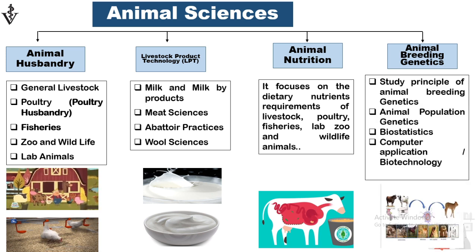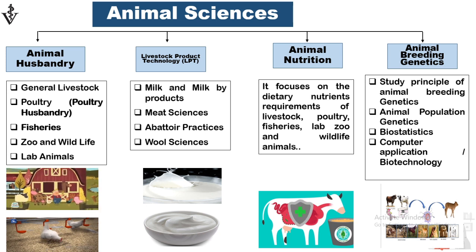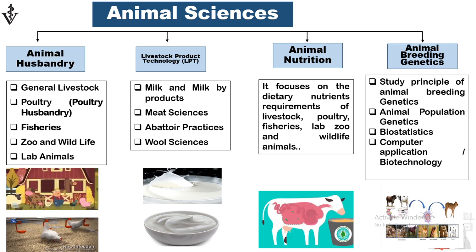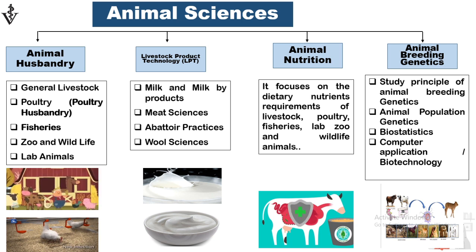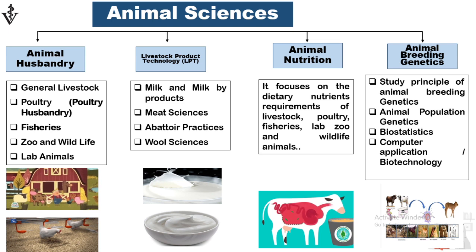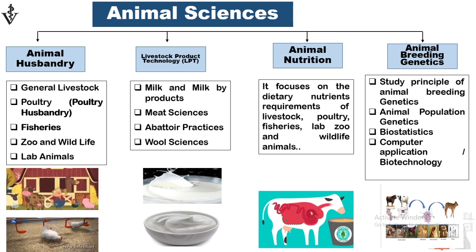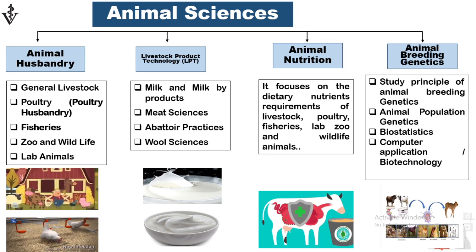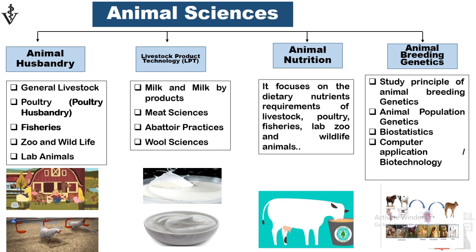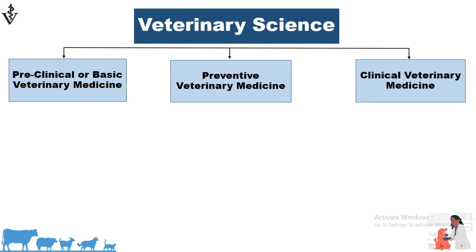The fourth branch is animal breeding and genetics. In this we study about the principles of animal breeding, genetics, animal population genetics, biostatistics, and computer applications or biotechnology. For example, if we want to improve our future generations or include a particular character in future generations, we have to study the principles of breeding.